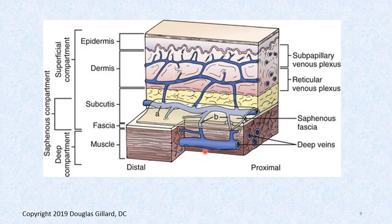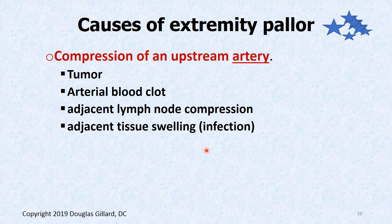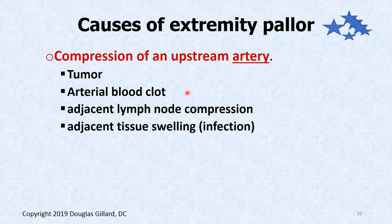What are some causes of extremity pallor? Compression of an artery — that's a beaver dam. Downstream you'll get decreased flow and therefore decreased color. What can cause a beaver dam in an artery? A tumor outside pushing into it. Inside the pipe you could get a blood clot that's broken loose from somewhere else. An adjacent lymph node — one of the inguinal lymph nodes, superficial or deep, gets really big and can compress the femoral artery or external iliac artery. Or tissue swelling can start to clamp down an artery. These are all beaver dams.